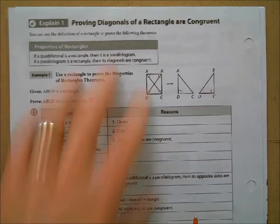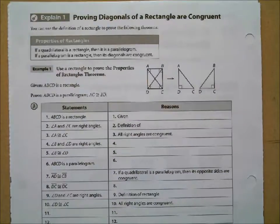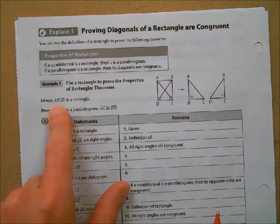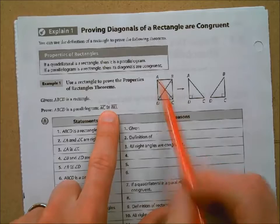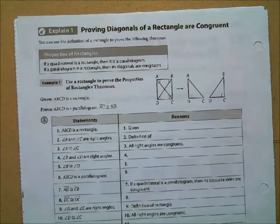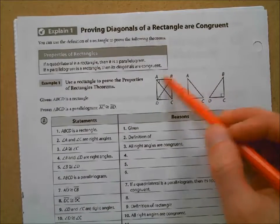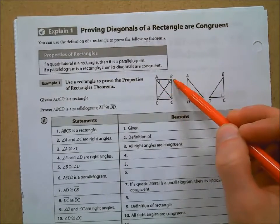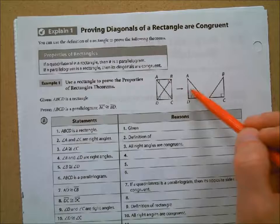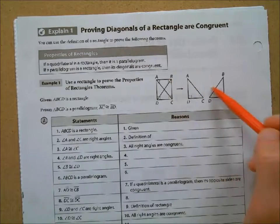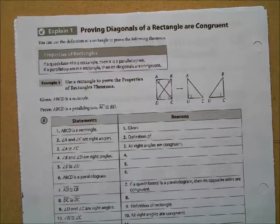This is the only official proof we're going to run through today. It's kind of long, but that's because we're going to prove two things at once. We're going to start with ABCD being a rectangle and prove ABCD is both a parallelogram and that the diagonals AC and DB are the same length. We'll draw the diagonals in and separate two triangles out of this rectangle — triangle ADC and triangle BDC. We're going to prove the triangles are congruent and then use that to help us with the rest.